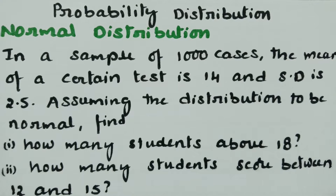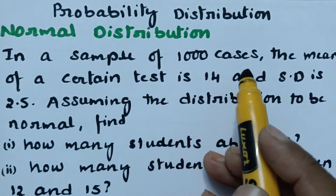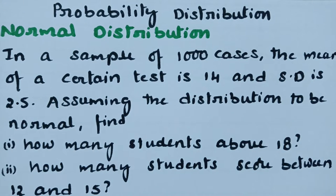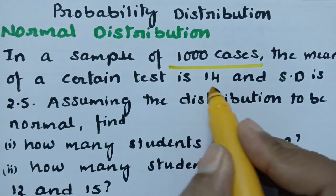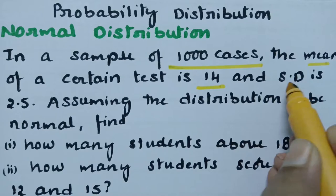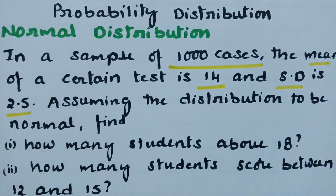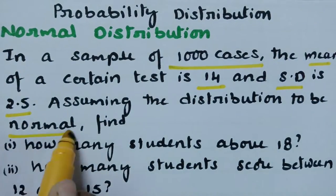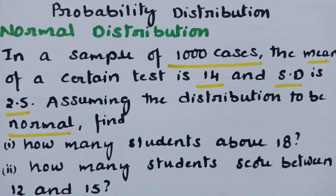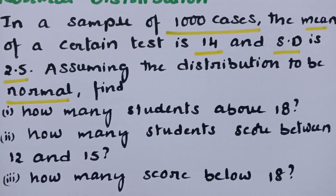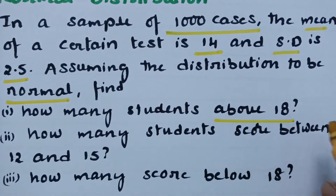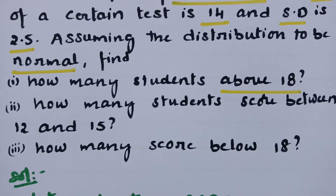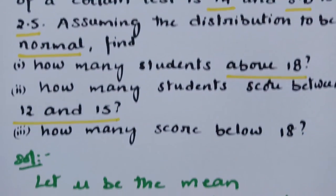This video is on normal distribution. In a sample of 1000 cases, the mean of a certain test is 14 and the standard deviation is 2.5. Assuming the distribution to be normal, we have to find: how many students scored above 18, how many students scored between 12 and 15, and how many scored below 18.